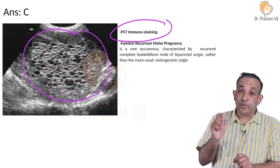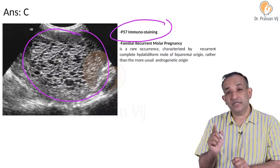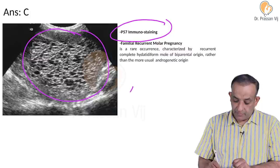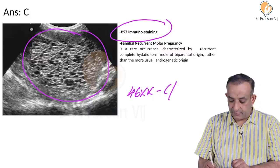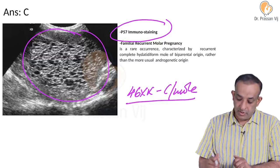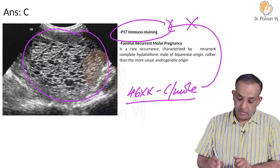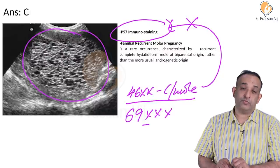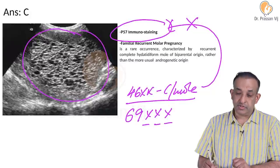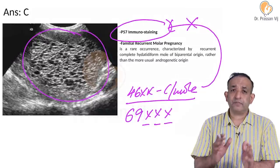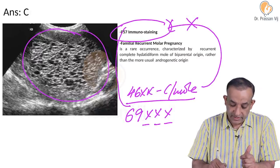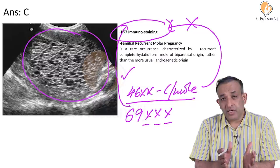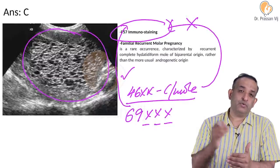We want to distinguish between a complete mole and partial mole because follow-up of a complete mole is much stricter - a complete mole is more likely to become a choriocarcinoma. The p57 immunostaining is positive only when there is a maternal contribution into the zygote formation. In a complete mole, the karyotype is 46XX with only paternal contribution, so p57 immunostaining is absent. In a partial mole, the karyotype is most commonly 69XX with maternal contribution, making p57 positive.